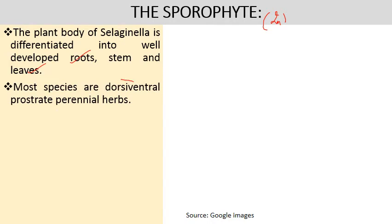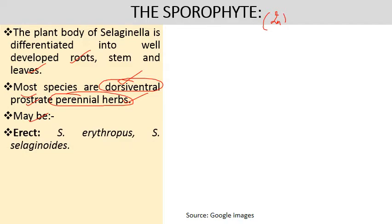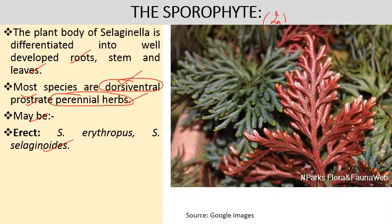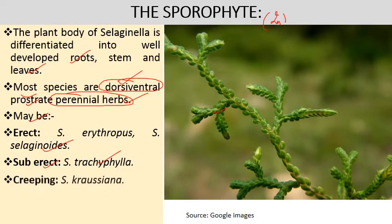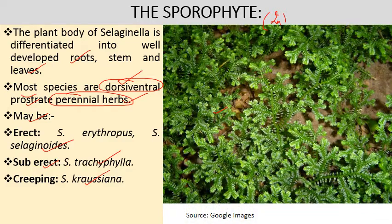Most species are dorsiventral — differentiated into dorsal and ventral surfaces — and show prostrate or creeping habit, growing horizontally on the soil surface. They are perennial herbs. Some species may be erect, for example Selaginella erythropus — erythro means reddish color, visible on its undersurface. Some species are sub-erect, for example Selaginella tracheophylla.